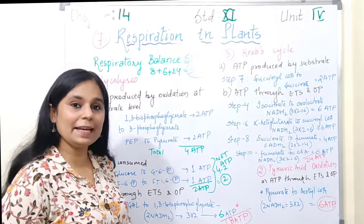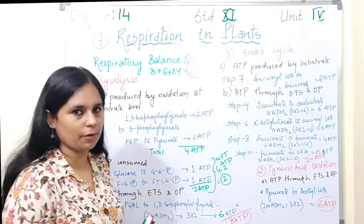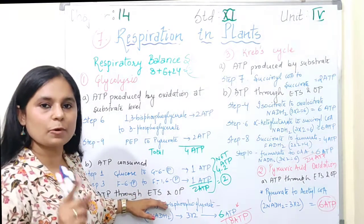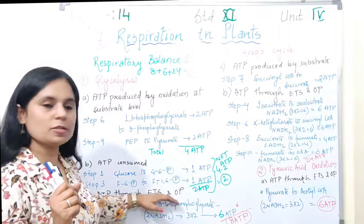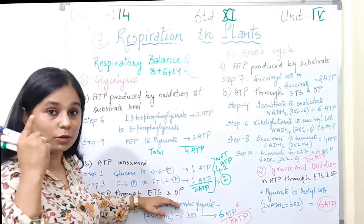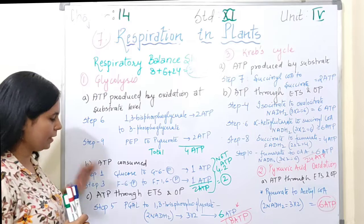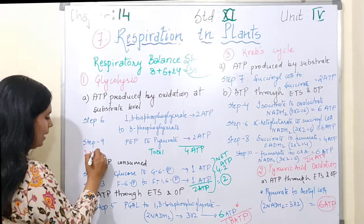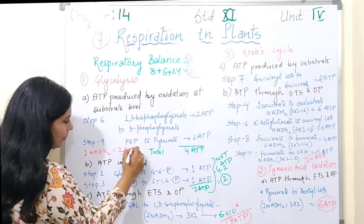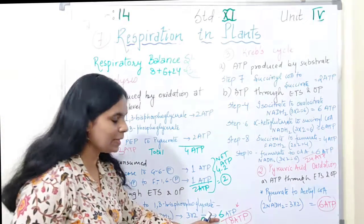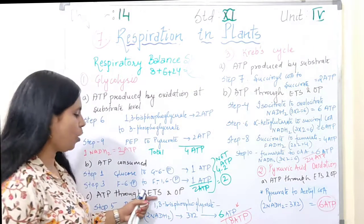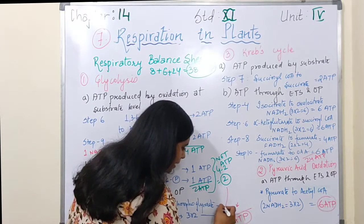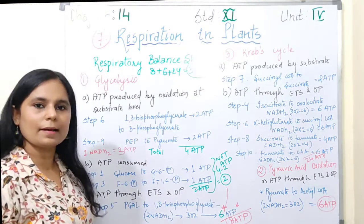Aapko yaad hai ki 2 molecules of NADH2 bhi bante hain. ATP formed through electron transport system and oxidative phosphorylation — glycolysis mein NADH2 ke 2 molecules bane the, that are going to make total 6 ATP. Kyunki 1 NADH2 gives 2–3 ATP, so 2 molecules of NADH2 se 6 ATP. 6 ATP oxidative phosphorylation se aur 2 net ATP — total 8 ATP in case of glycolysis.